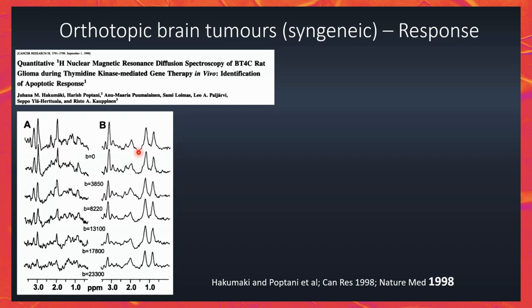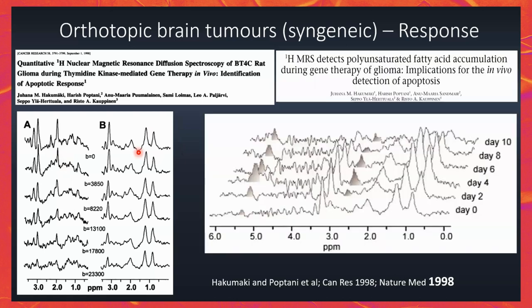Compared to choline, the lipid peaks do not show as much diffusion change because lipid and triglyceride molecules are more bound, whereas choline is a freer molecule. Another marker for apoptosis we showed in similar studies was from single voxel spectroscopy over a few days. Around day two of treatment, when the tumor was still growing and volume changes were less evident, we saw a very high increase in polyunsaturated fatty acids — a marker of apoptotic cell death.